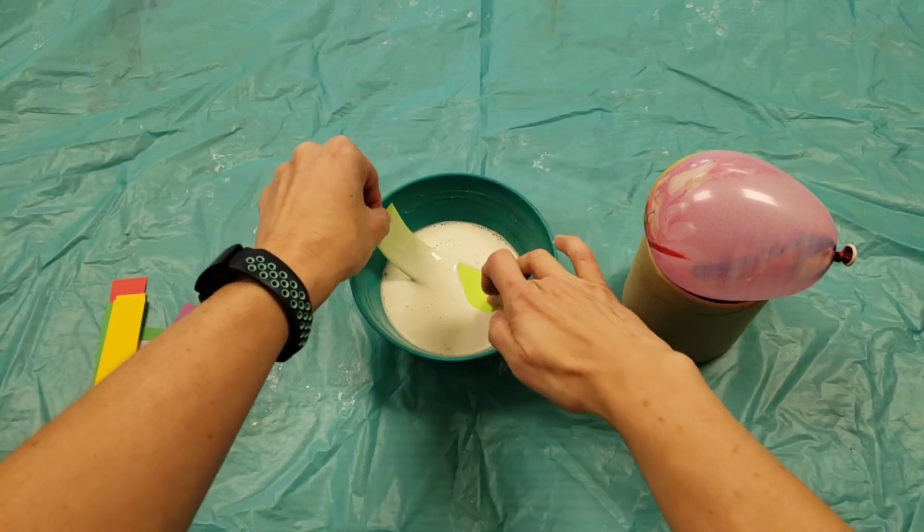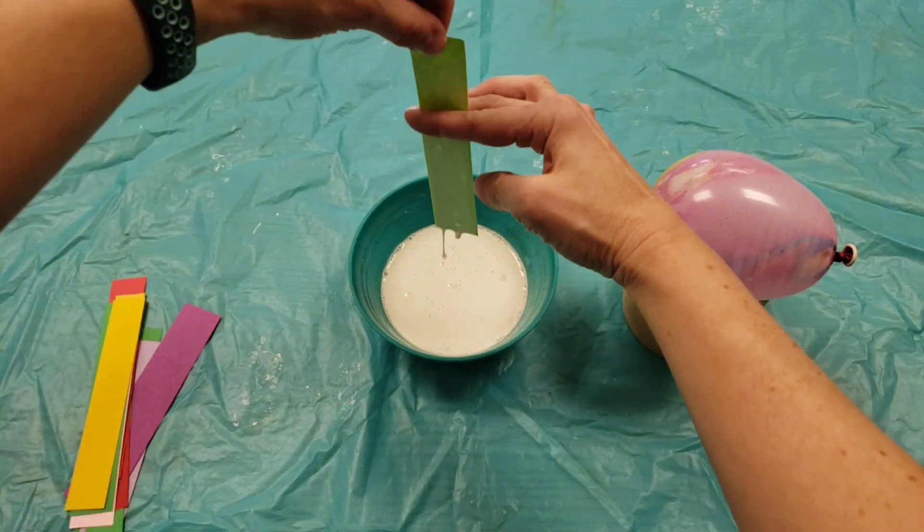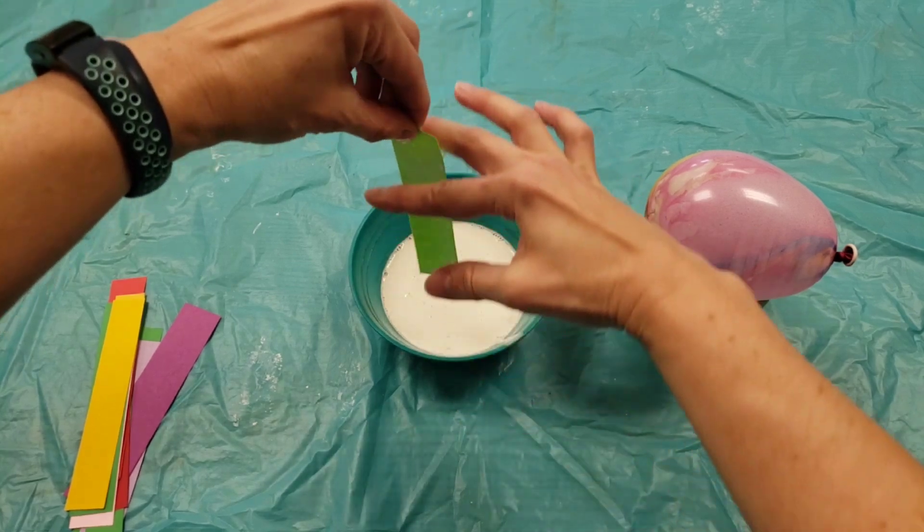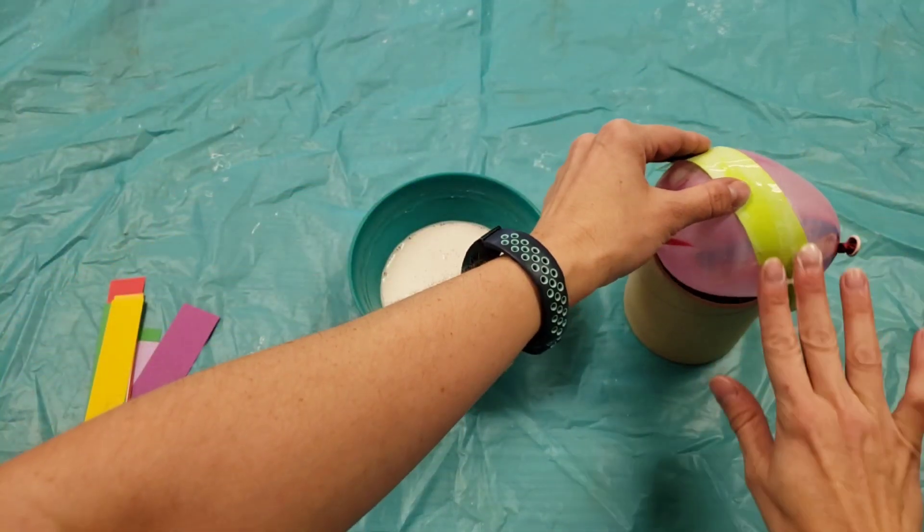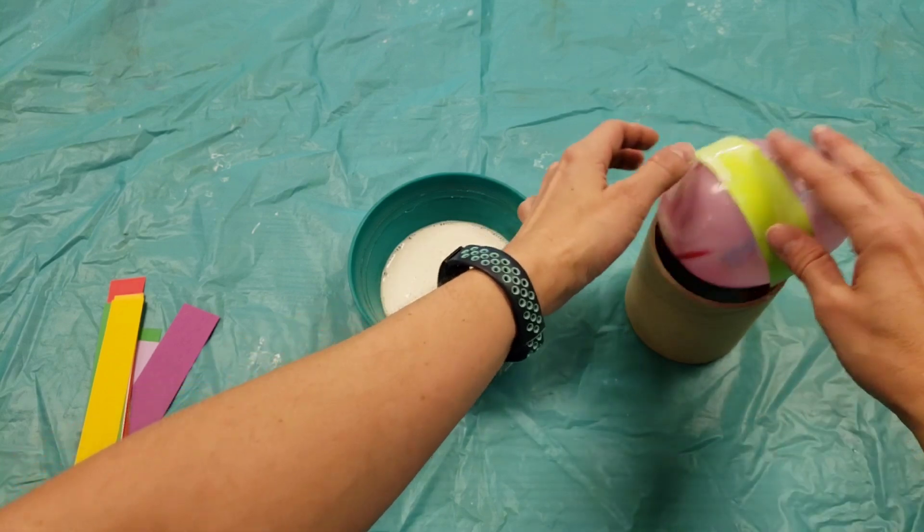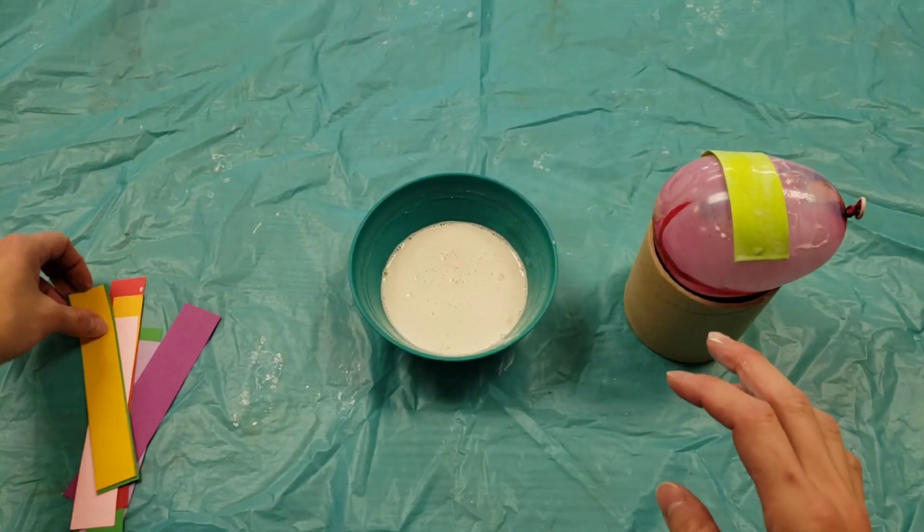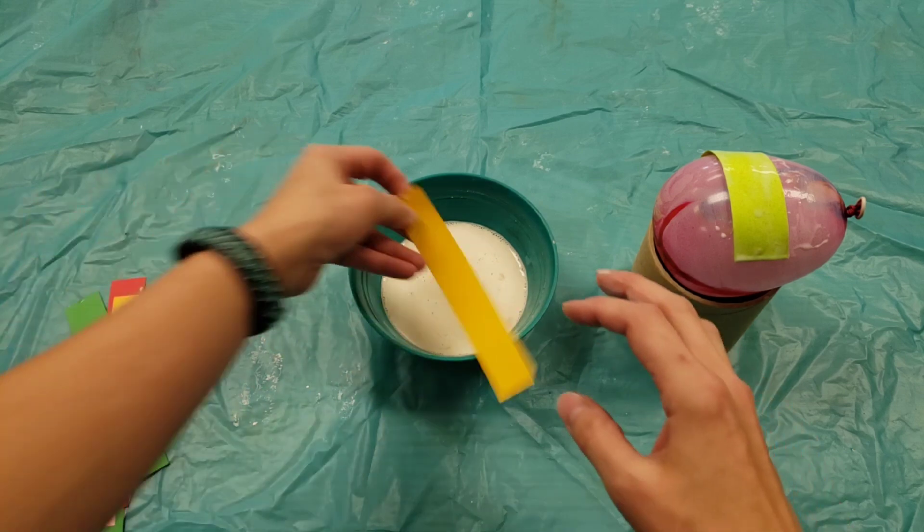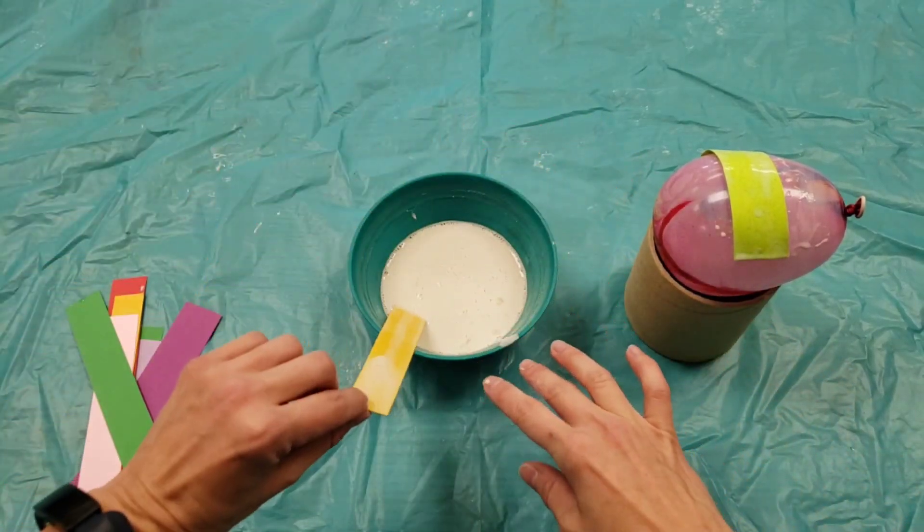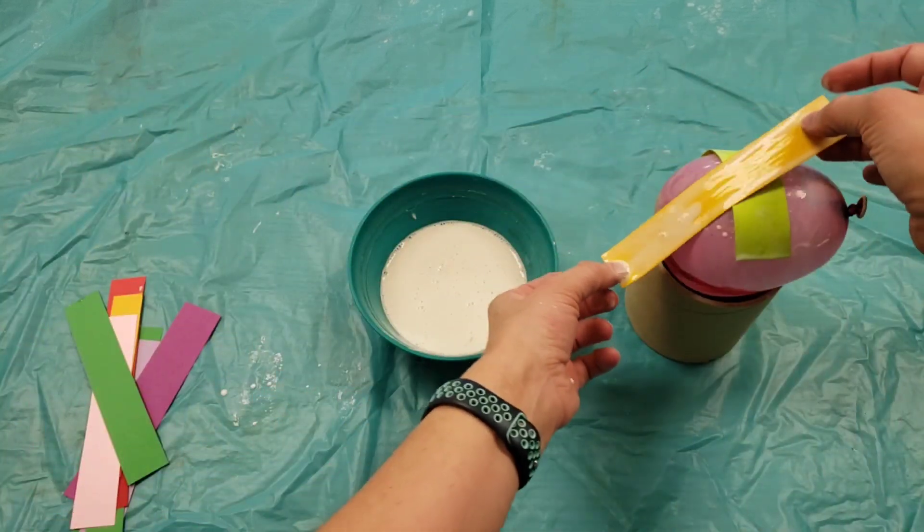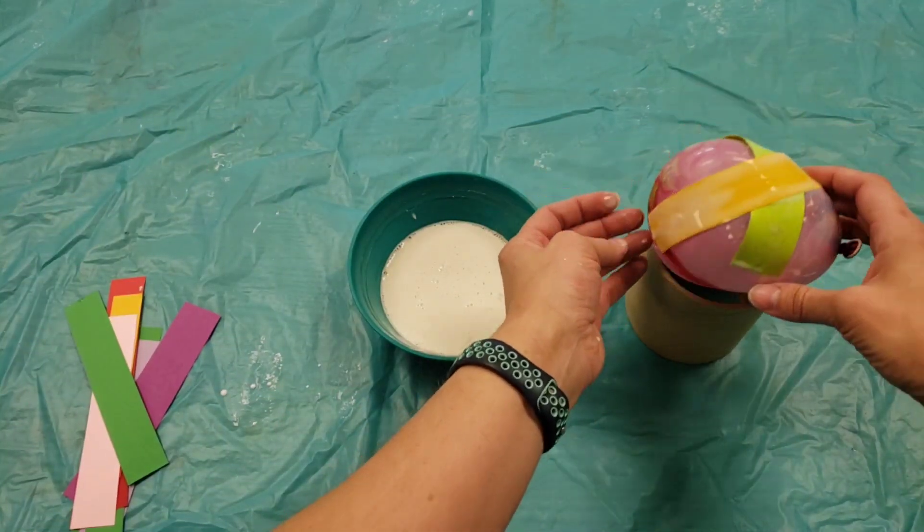The way this works is we put the strip in this glue mixture and kind of swipe off a little of the extra with your fingers. So you just pinch it with your fingers and swipe and we're going to lay it on the balloon and massage it. And repeat. Wiping off a little bit of the extra. We should still see some glue on there. Lay it on the balloon.